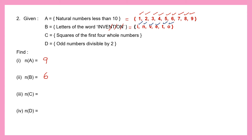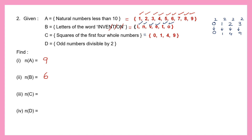Set C is squares of the first four whole numbers. The first four whole numbers are 0, 1, 2 and 3. Their squares: 0² = 0, 1² = 1, 2² = 4, 3² = 9. So the elements of set C are 0, 1, 4 and 9 — that's 1, 2, 3 and 4 elements. The cardinal number of set C is 4.